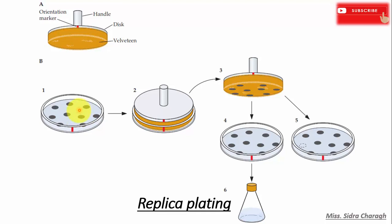first, cells from each separated colony on a master plate adhere to the replica plating device after it is gently pressed against the agar surface, and the adhering cells are then transferred in succession to a petri plate with complete medium and to one with selective medium.